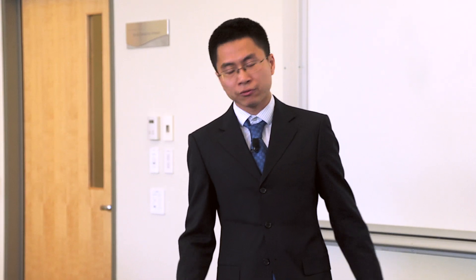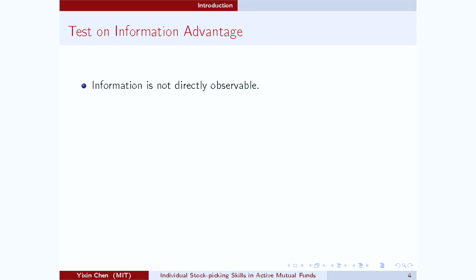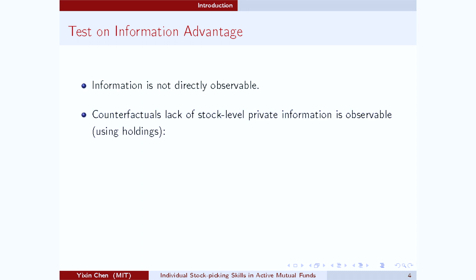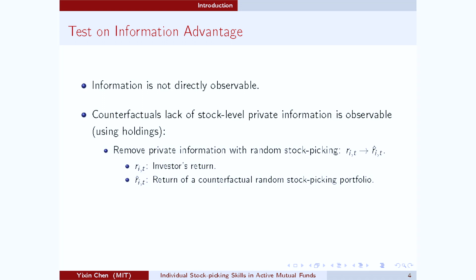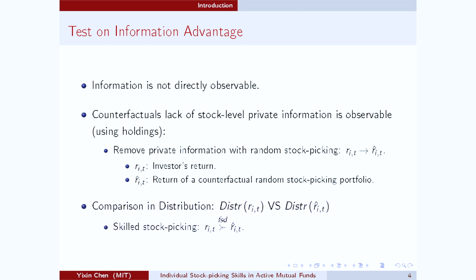In general, it is very difficult to formally test whether or not an investor has superior information because the information is just not observable. But the key insight from the paper is that even though information is not directly observable, we do observe what it is like to have no information. Specifically, I will try to remove any potential private stock-level information that the investor might have by constructing counterfactual portfolios that pick stocks randomly. Then, the detection of the investor's superior ability to pick stocks boils down to the comparison between the investor's return distribution and the return distribution of the counterfactual portfolio.